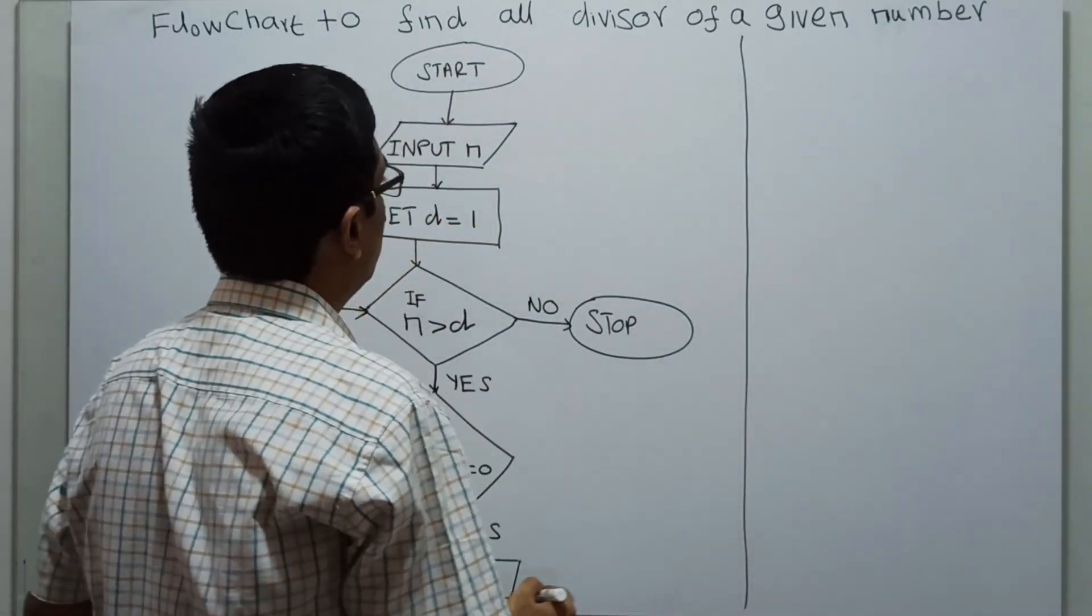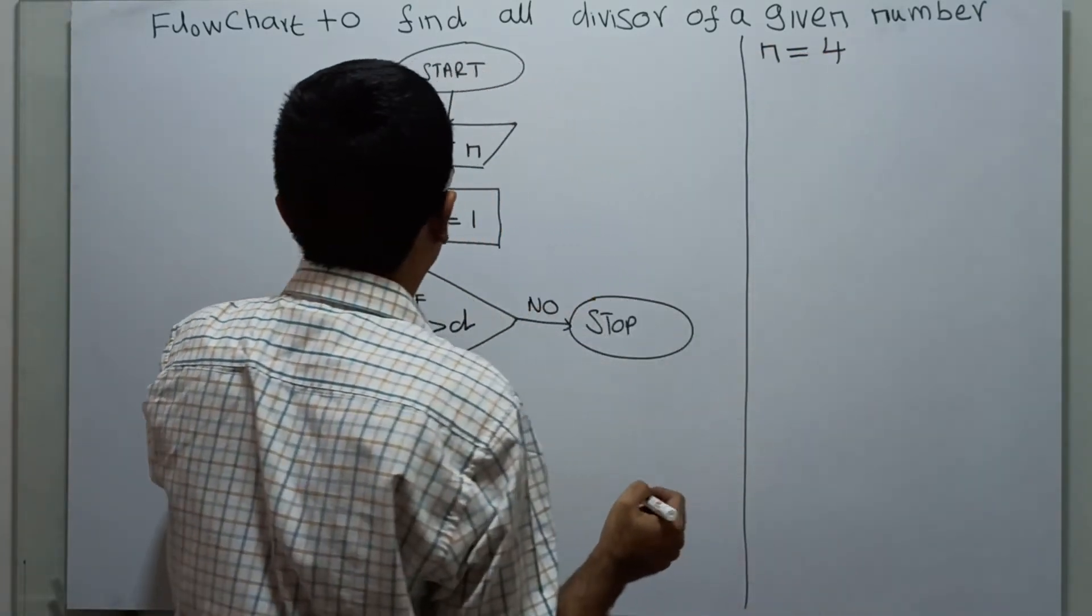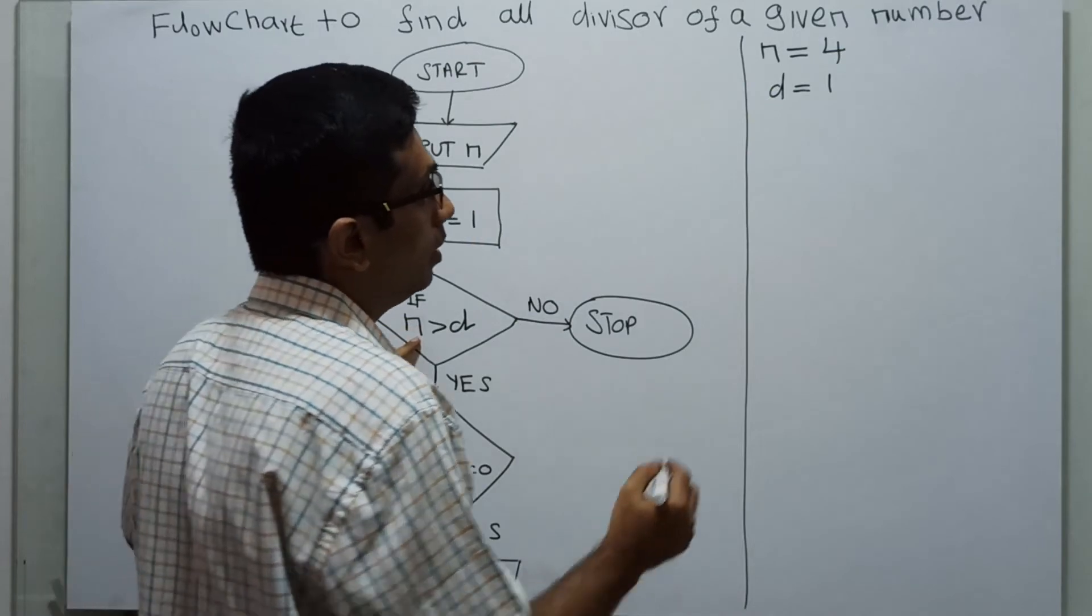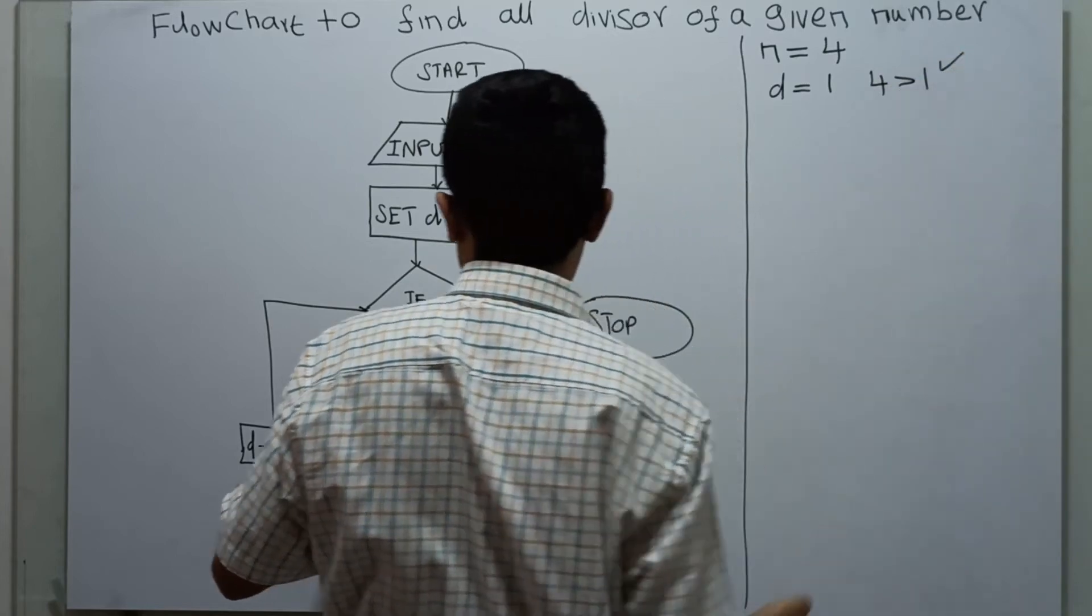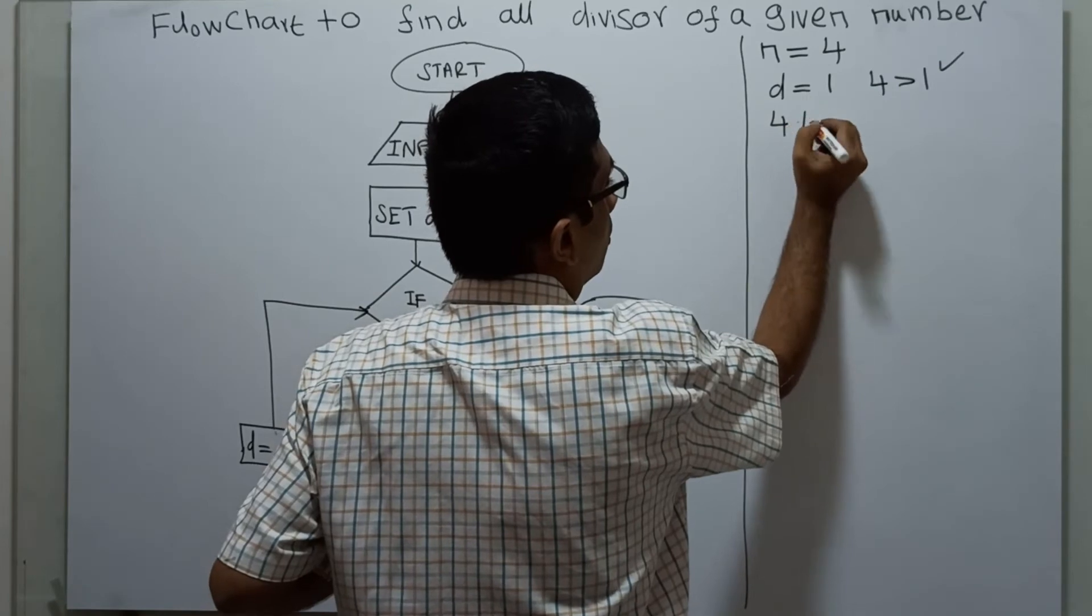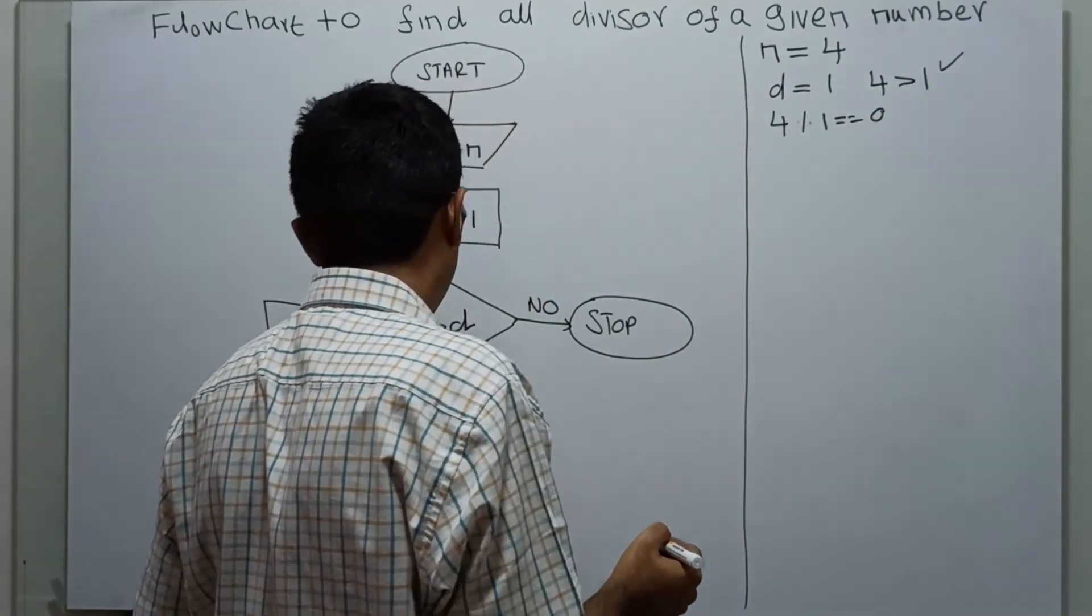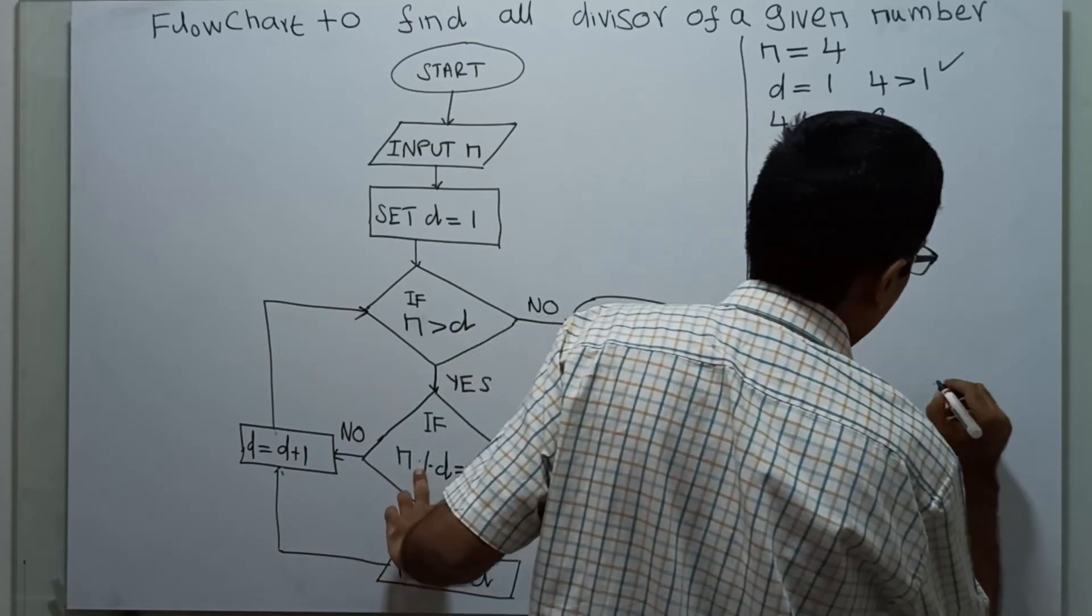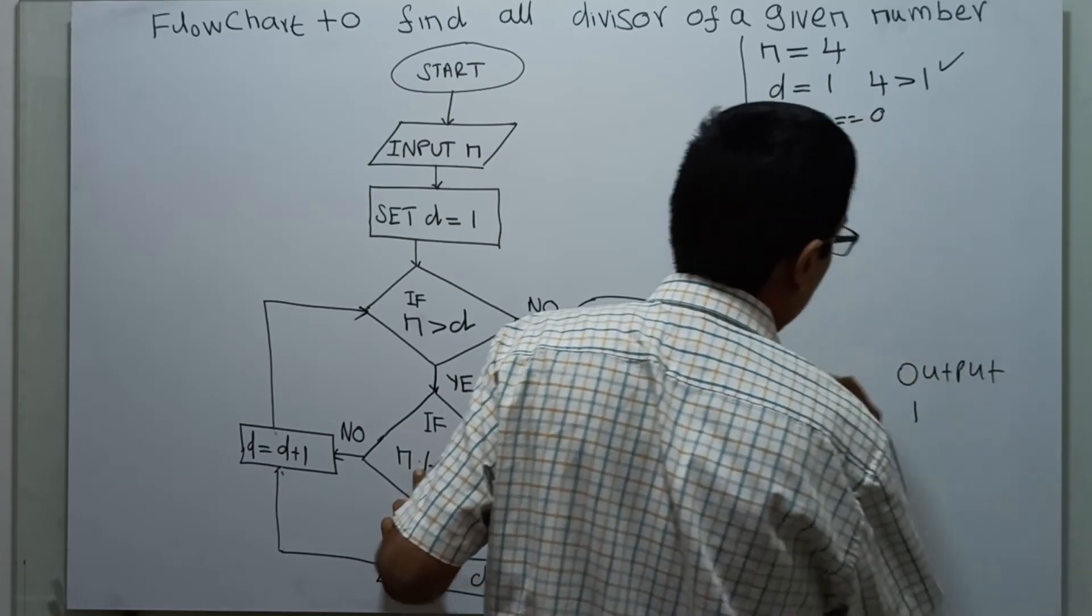For example, I am taking the value of n equal to 4. First, I am setting d equal to 1. So n greater than d, that means 4 greater than 1, which is true. Then I am checking 4 modulo 1 equal to 0. Yes, 4 modulo 1 remainder is 0. So my output, 1 will get printed.